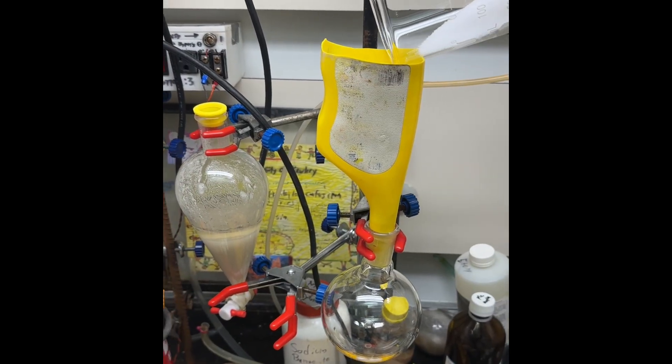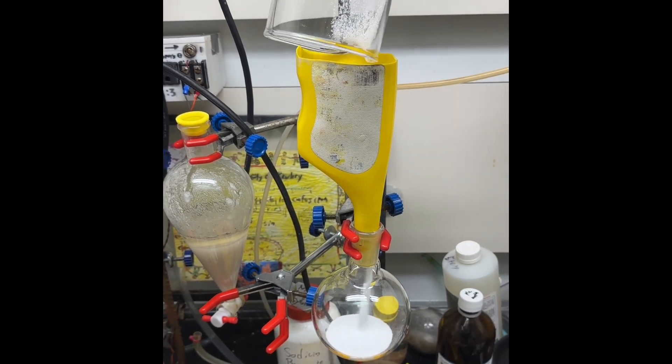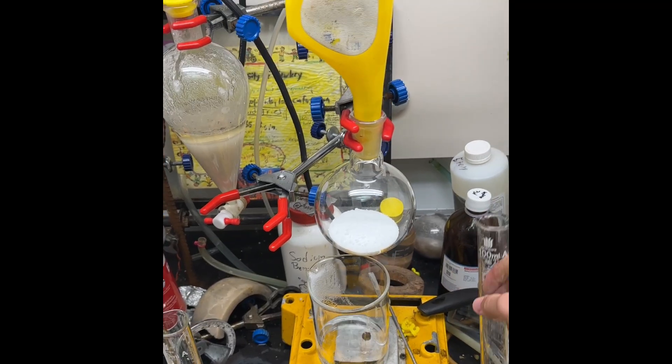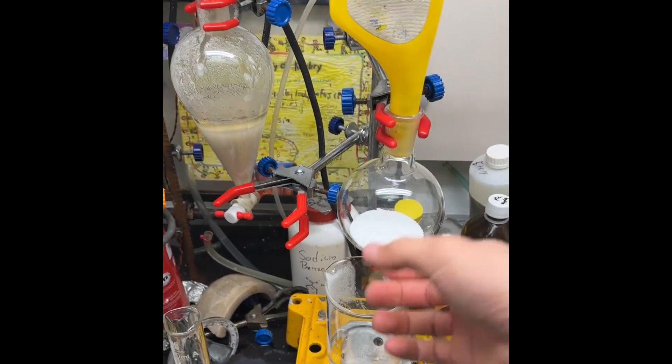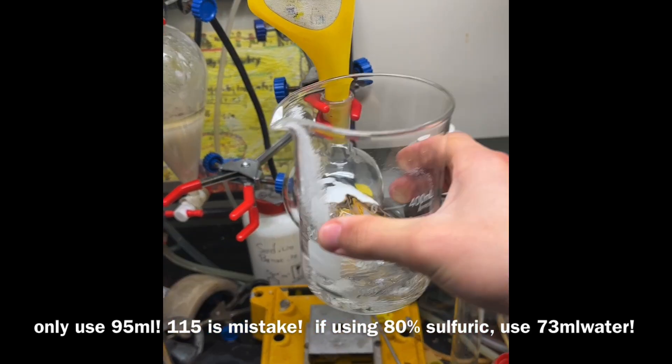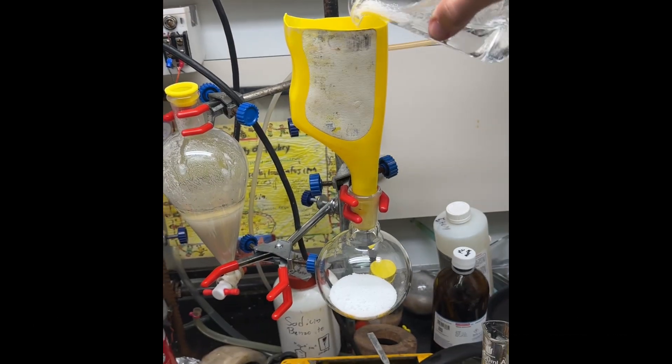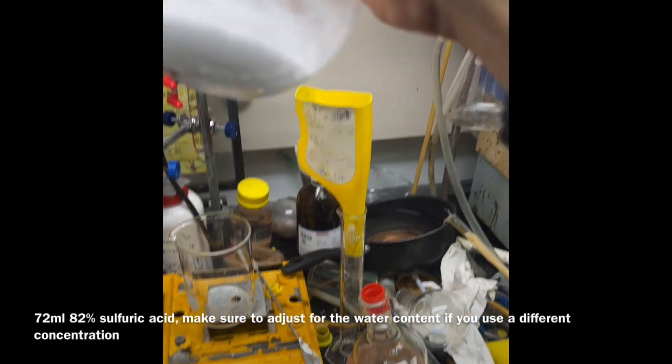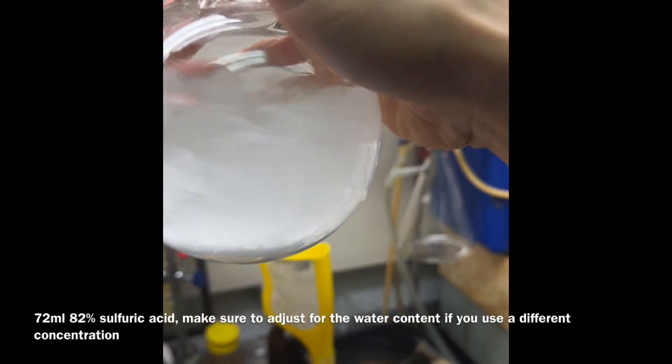Okay, so here's 111 grams of sodium bromide and about 95 plus 20 milliliters of water. The dissolution of sodium bromide is endothermic, it gets cold as it dissolves.